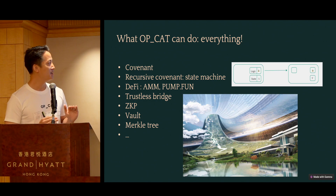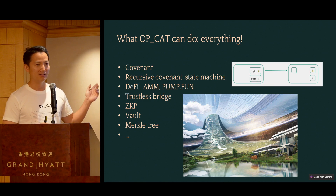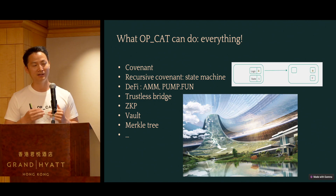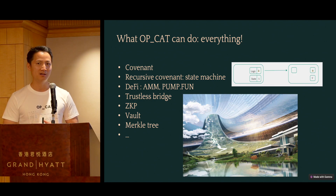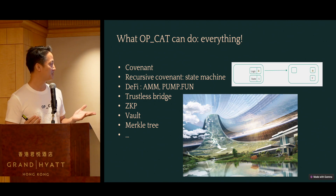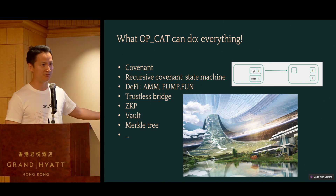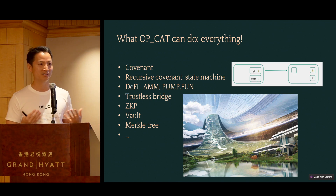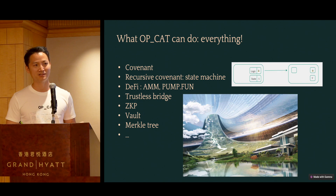So once you have state in Bitcoin — with only the addition of OpCAT — you can really make Bitcoin do every smart contract you can do on any other blockchain, such as Ethereum. You can have a covenant, then you can have the recursive version of covenant, and with that you can build all kinds of DeFi applications natively on Bitcoin layer one. No trusted third party, no bridging, no sending this to some centralized custodian. Starkware is leading the efforts to do even zero-knowledge proofs using OpCAT. You can also do a vault — basically everything.